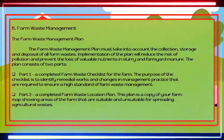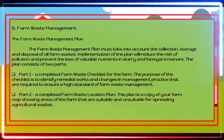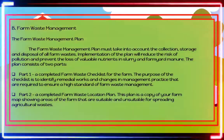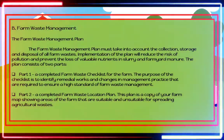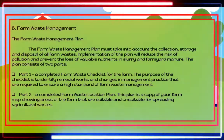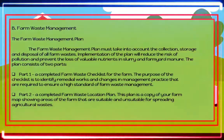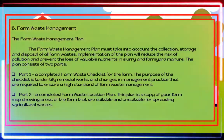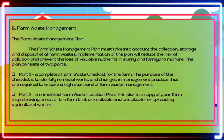Part 1 is a completed farm waste checklist for the farm. The purpose of the checklist is to identify remedial works and changes in management practice required to ensure a high standard of farm waste management. Part 2 is a complete farm waste location plan showing areas of the farm that are suitable and unsuitable for spreading agricultural waste. The checklist enables you to audit your farmyard to ensure that farm waste management standards — including disposal of manures, silage effluent, waste plastics, fallen animals, and veterinary waste — meet current legislation and good farming practice. The checklist must be continually reviewed and updated annually.